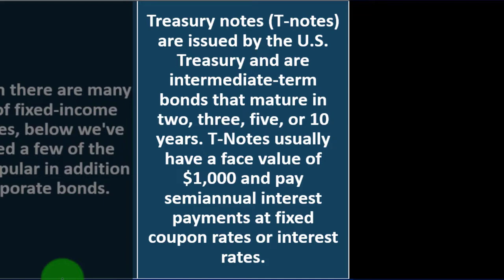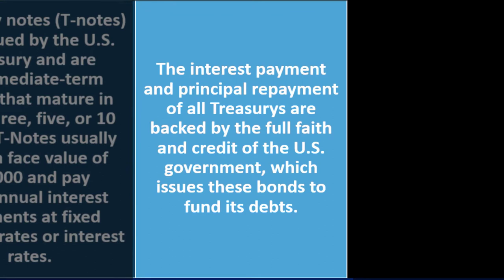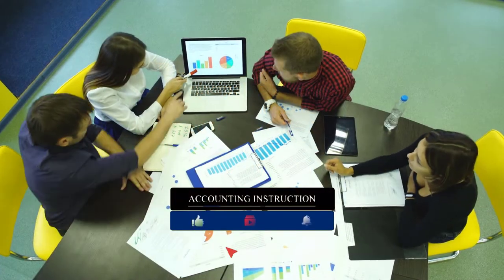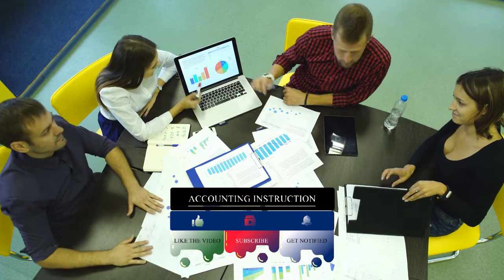Treasury notes — T-notes — are issued by the U.S. Treasury and are intermediate-term bonds that mature in 2, 3, 5, or 10 years. T-notes usually have a face value of $1,000 and pay semi-annual interest payments at fixed coupon rates. The interest and principal payments of all Treasuries are backed by the full faith and credit of the U.S. government, which issues the bonds to fund its debt. These are typically our baseline for bonds — considered essentially risk-free since the government has the power to tax and print money.